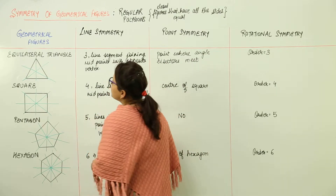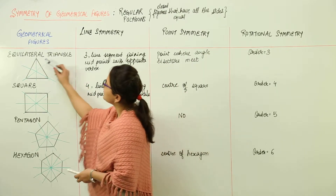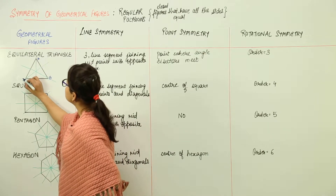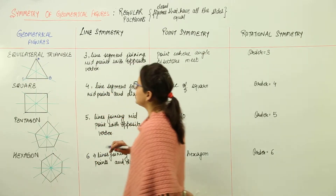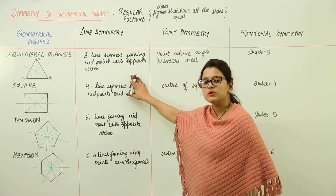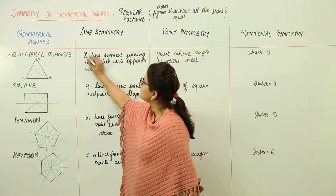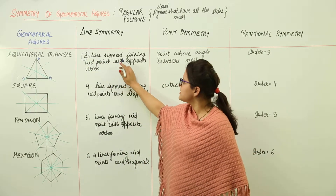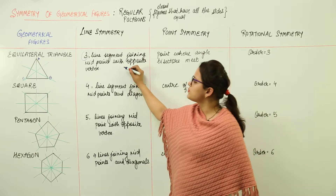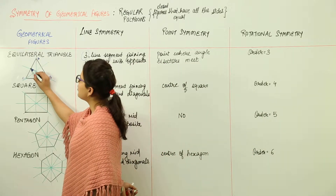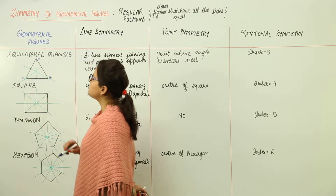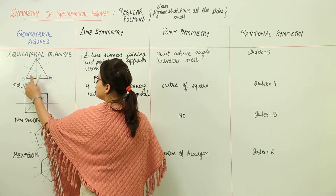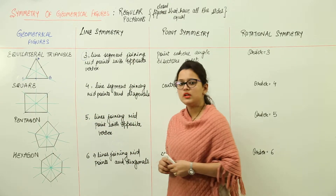First we have the equilateral triangle. In an equilateral triangle, all three sides are equal — that is, AB is equal to BC is equal to CA. So what is the line symmetry for the equilateral triangle? The line symmetry is 3. Those lines are the line segments joining the midpoints with the opposite vertex. These three midpoints are joined with the opposite vertex, giving us the three lines of symmetry.